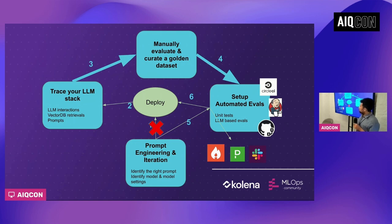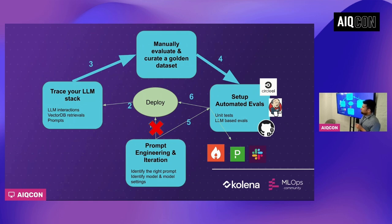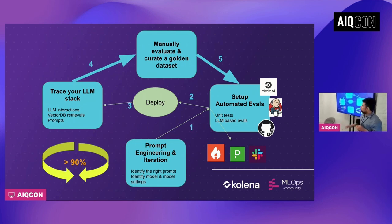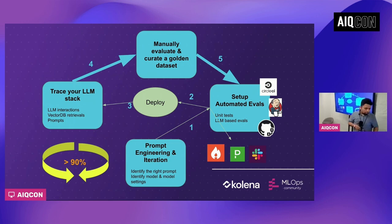You can hook it up to CircleCI, Jenkins, GitHub Actions, whatever you use. You also need to set up alerting so that in case it regresses, it doesn't take the newly iterated version of your application to production. This is the feedback system you need to establish to iterate your way to over 90% accuracy, and it's going to be very specific to the use case you are dealing with. In the upcoming slides, I'm going to show how LangTrace can help you establish this.